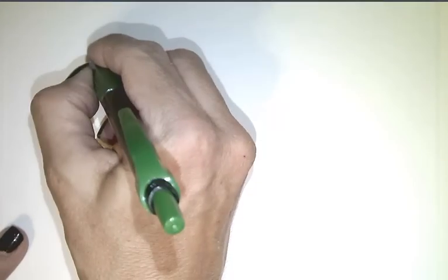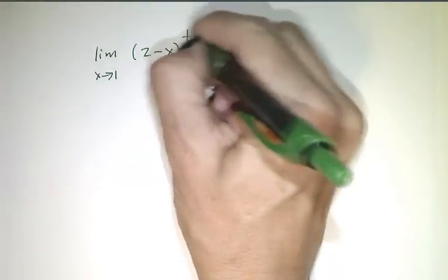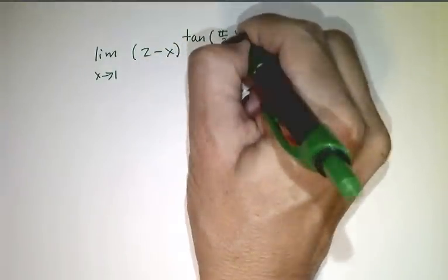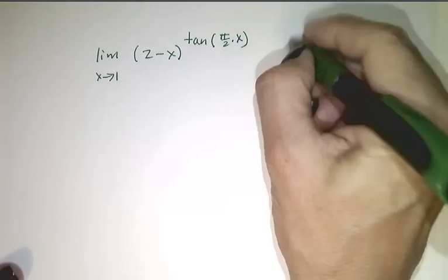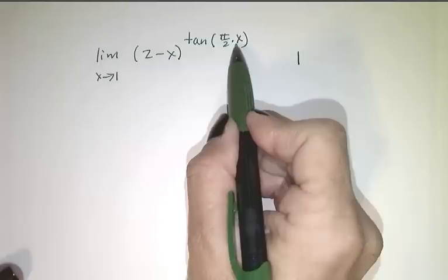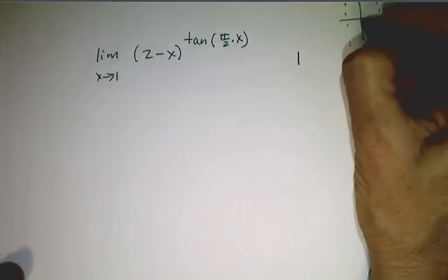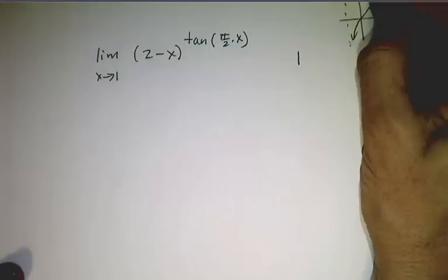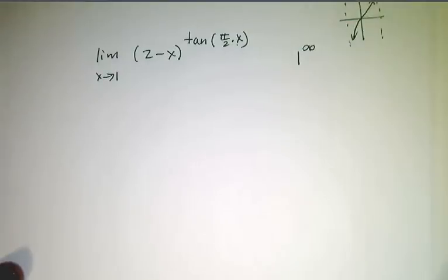Let's look at one more example: the limit as x approaches 1 of (2 minus x) raised to the tangent of pi over 2 times x. As x goes to 1, 2 minus x goes to 1. And as x goes to 1, pi over 2 times x goes towards pi over 2, and as I remember the graph of tangent, as I get close to pi over 2, tangent approaches infinity. So this is a 1 to the infinity type, which is an indeterminate power.